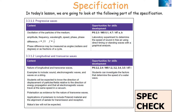We're going to look at the following parts of the AQA A-level physics specification: 3.3.1.1 progressive waves, and secondly 3.3.1.2 longitudinal and transverse waves.